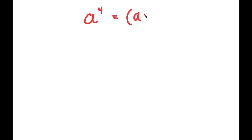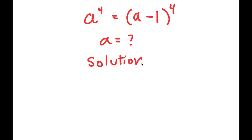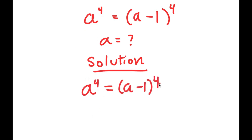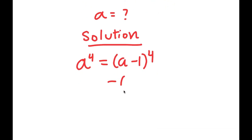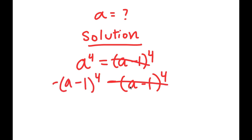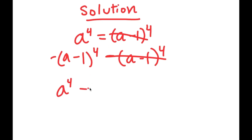In this video I'm going to be solving the equation a to the power of 4 equals a minus 1 to the power of 4. The only variable is a, which is what I'll be solving for. I'm going to rewrite the problem to have more solving space. My first step is to subtract a minus 1 to the power of 4 from both sides, so I get a to the power of 4 minus a minus 1 to the power of 4 equals 0.